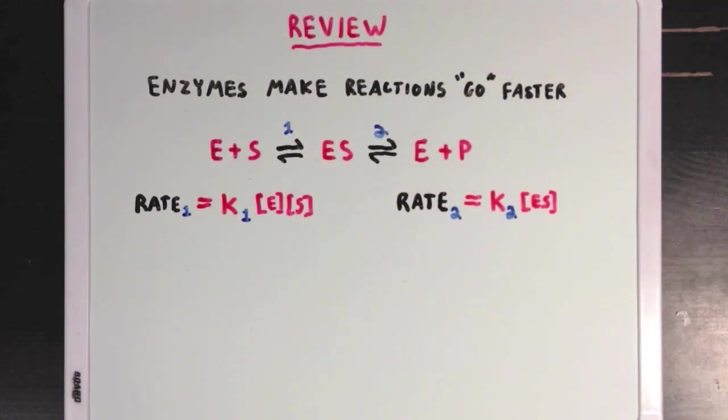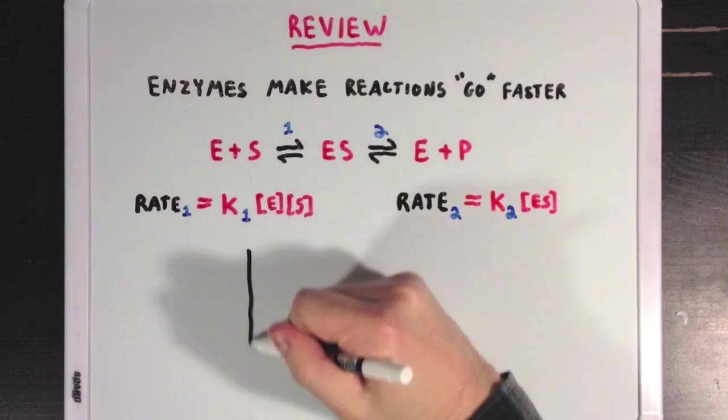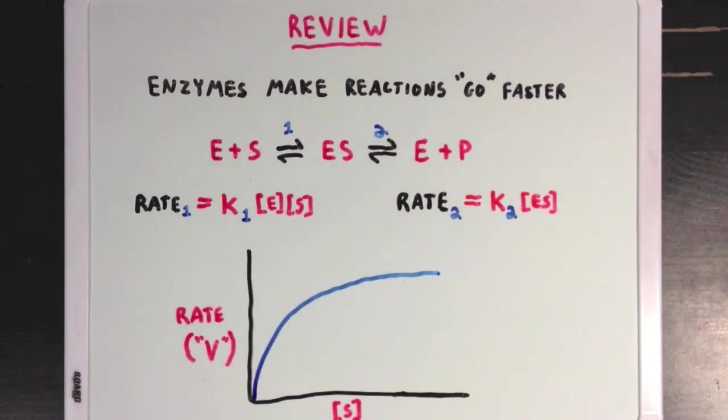Let's also review the idea that if we keep the concentration of enzyme constant, then at really high substrate concentrations, we'll hit the maximum speed for a reaction, which we call Vmax.